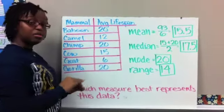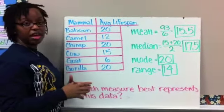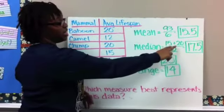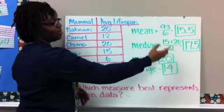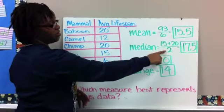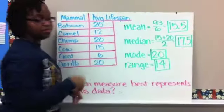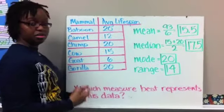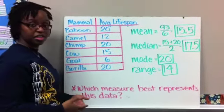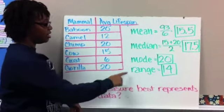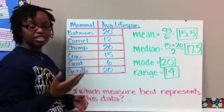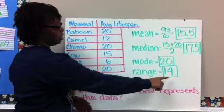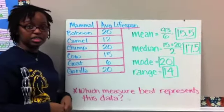Our median, we should have put them in order from least to greatest, found our middle number. In this case, we had two numbers in the middle, so we find the mean of those, adding them together and dividing by 2 to get a median of 17 and 5 tenths. Our mode is just the one that occurred the most often, which is 20 because it occurred three times in this set of data. And then the range is subtracting our highest value minus our lowest, and so 20 minus 6 gave us a range of 14.